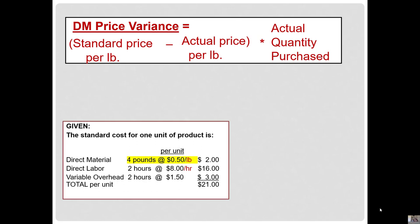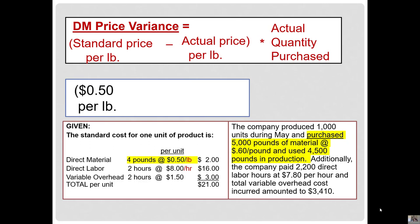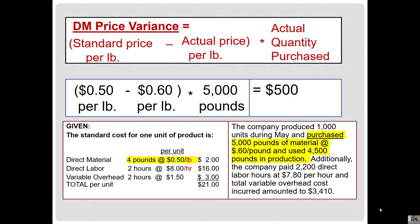For materials, we thought that we should use 4 pounds and should pay 50 cents per pound for each unit. We purchased 5,000 pounds of material at 60 cents per pound, and we used 4,500 pounds. The standard price is 50 cents per pound, the actual price is 60 cents per pound, and we bought 5,000 pounds. This gives us a $500 variance, and it is unfavorable. When you pay 60 cents per pound but should have paid 50 cents, it costs the company more money.